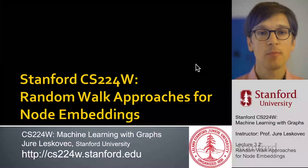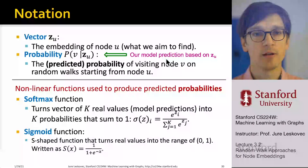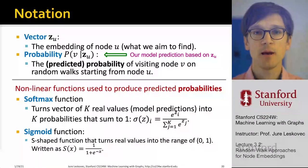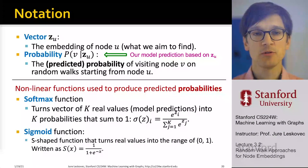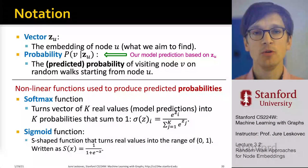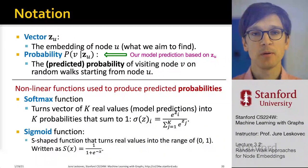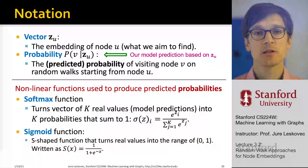We are going to talk about random walk approaches to node embeddings. The idea is that we are going to learn a vector z for every node — this will be an embedding of the node. We are also going to define a probability that will be the predicted probability of how similar a given node u is to some node v. Using random walks to define this similarity, this will be the predicted probability of visiting node v on random walks starting from node u.